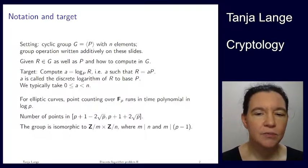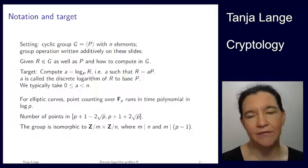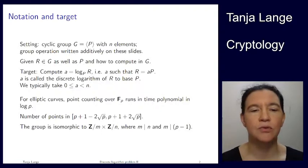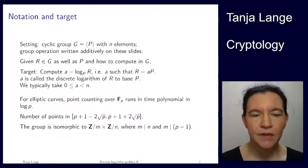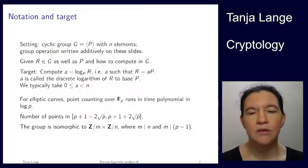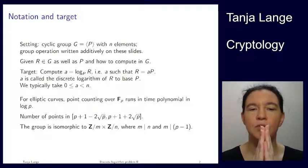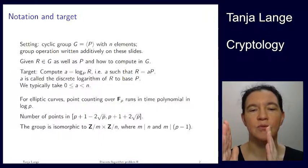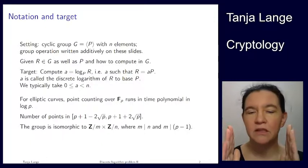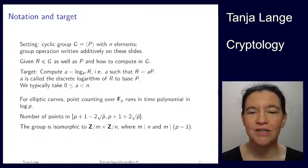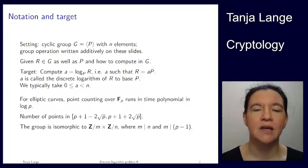If you have an elliptic curve group over Fp, then point counting runs in time that is polynomial in the bit lengths, polynomial in log of p. The number of points I said in the previous lecture is about p plus 1. In more precise statements, it's in the Hasse interval. So it's centered at p plus 1, at the lower end it's p plus 1 minus 2 squared of p. On the upper end, it's p plus 1 plus square root of p.